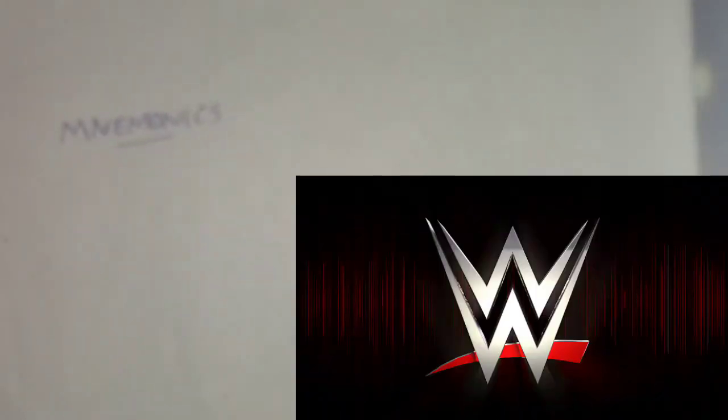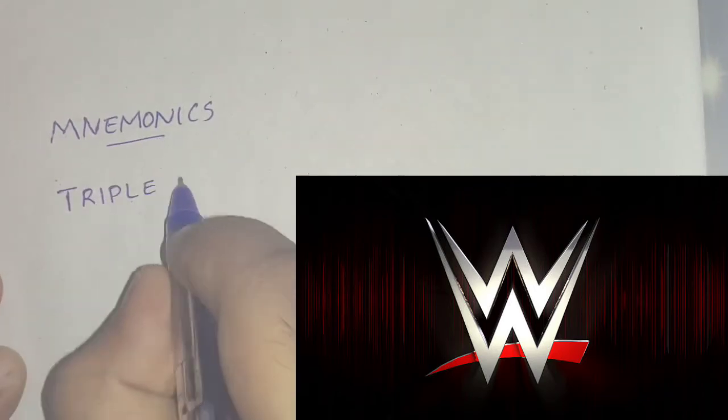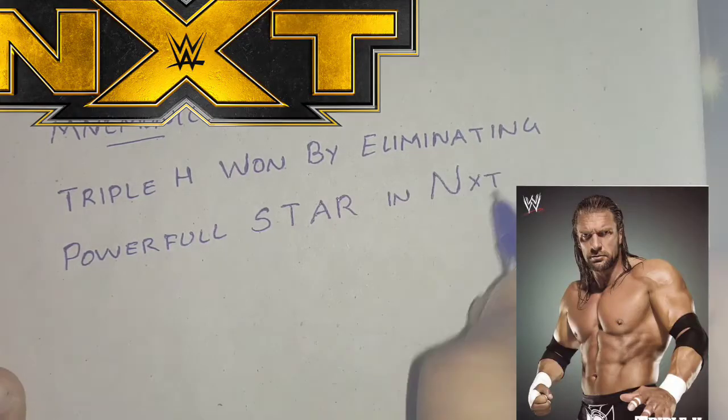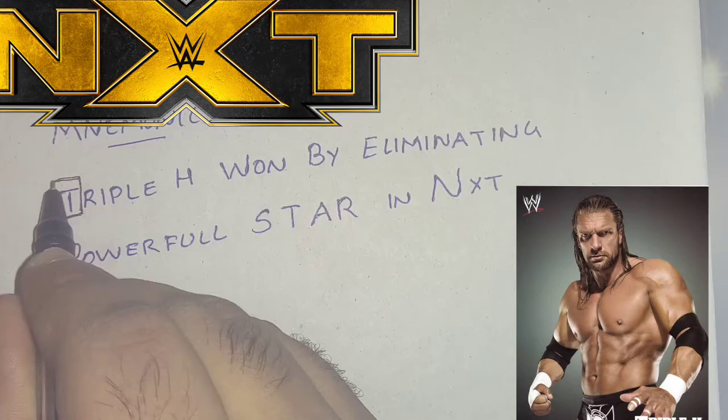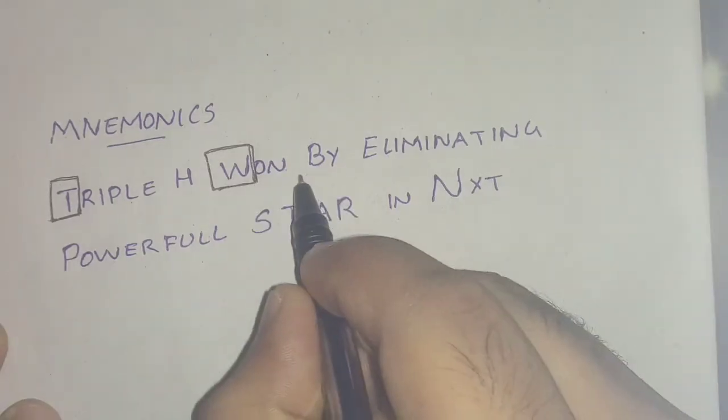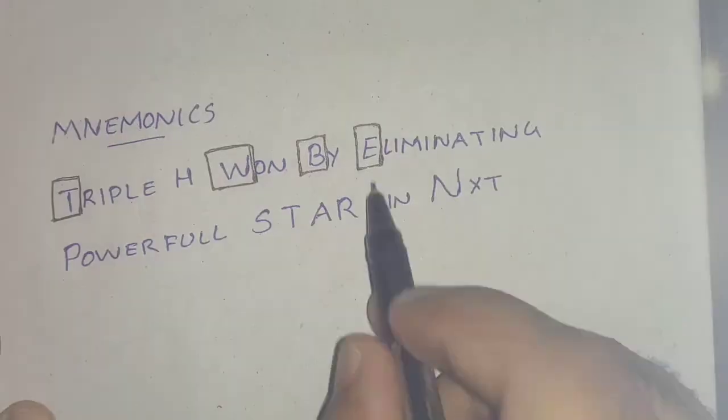Now for the mnemonic to remember all the functions. All of you know about WWE and stars, and you already know about NXT. The Triple H won by eliminating Powerful Star in NXT. So T stands for the transport function, W for water balance, B for blood pressure, and E for the excretory function.